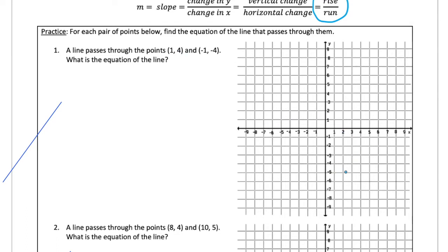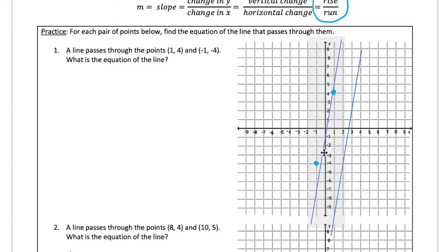This example tells us a line passes through the points (1, 4) and (-1, -4). First, we plot (1, 4) — one on the x-axis and four on the y-axis. Our second point is (-1, -4), which is one to the left on the x-axis and four down on the y-axis. Next, take a ruler and draw a line through those points carefully so we can see how the line looks.